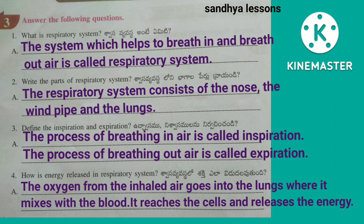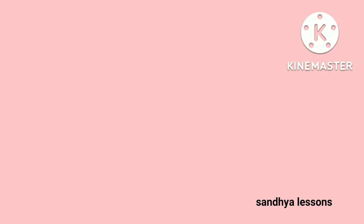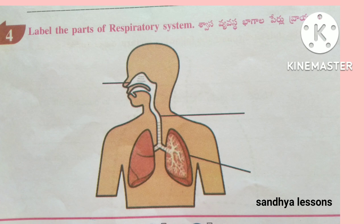The oxygen from the inhaled air goes into the lungs, where it mixes with the blood. It reaches the cells and releases energy. Fourth, label the parts of the respiratory system: nose, windpipe, lungs.